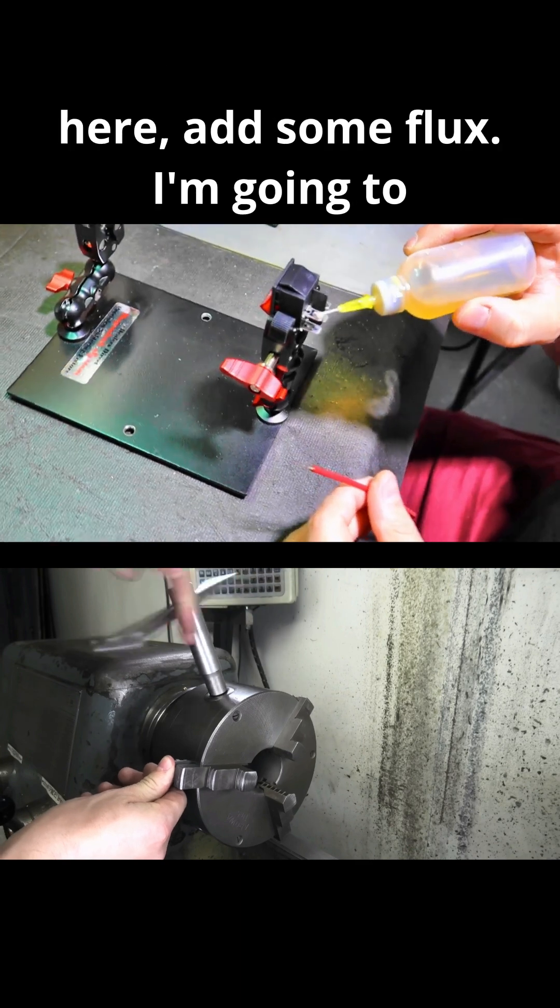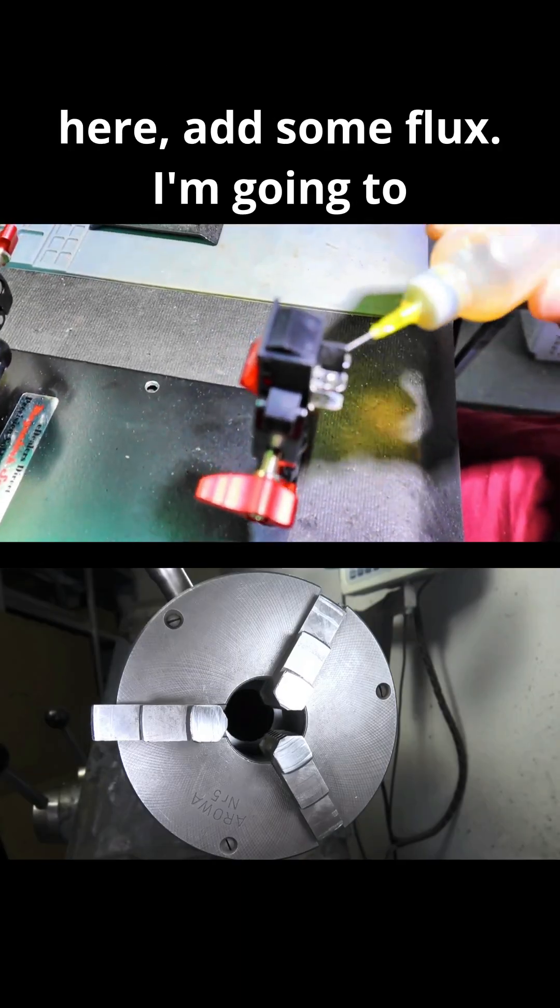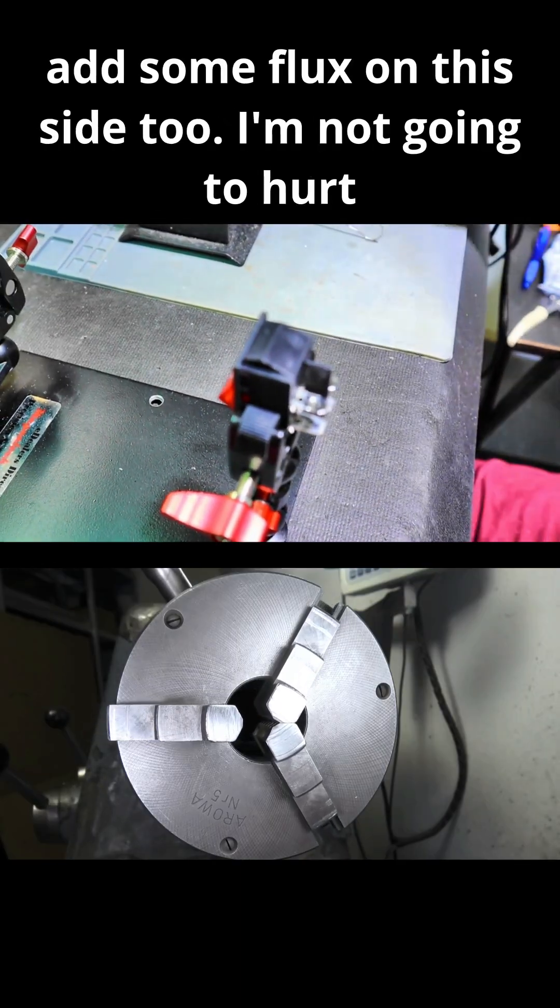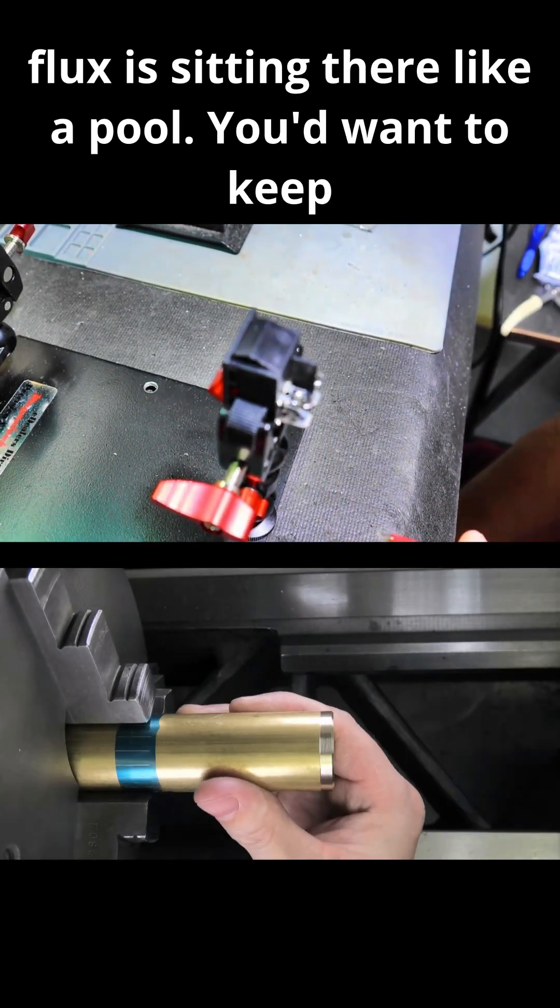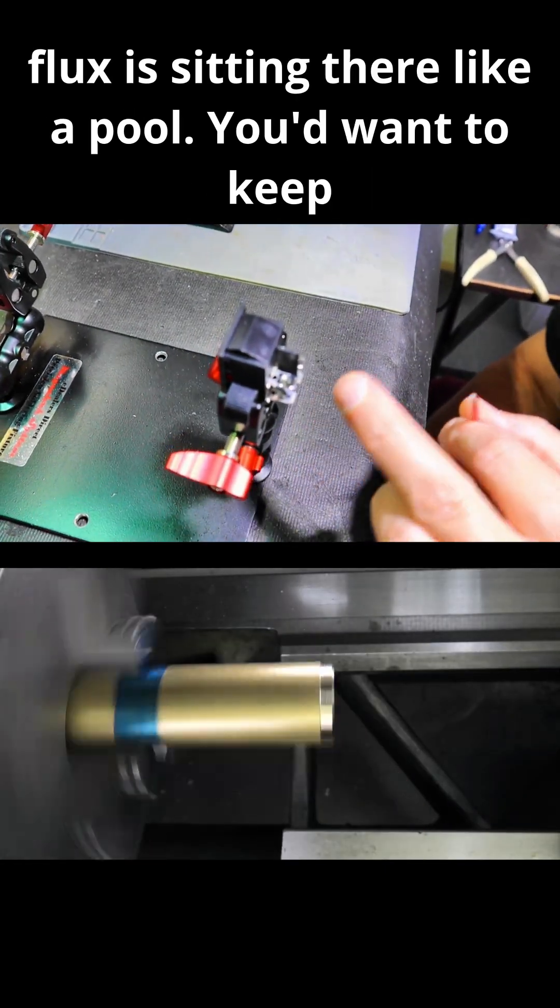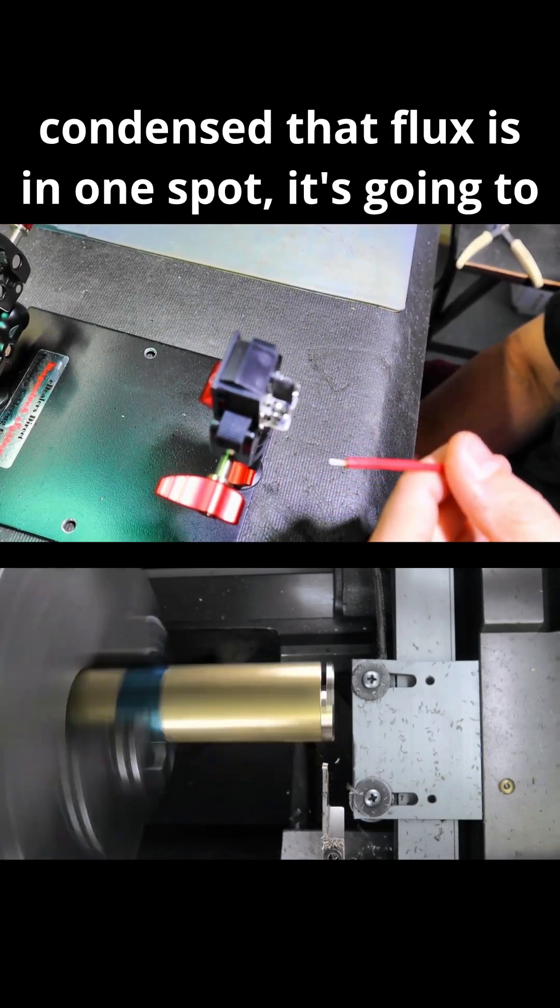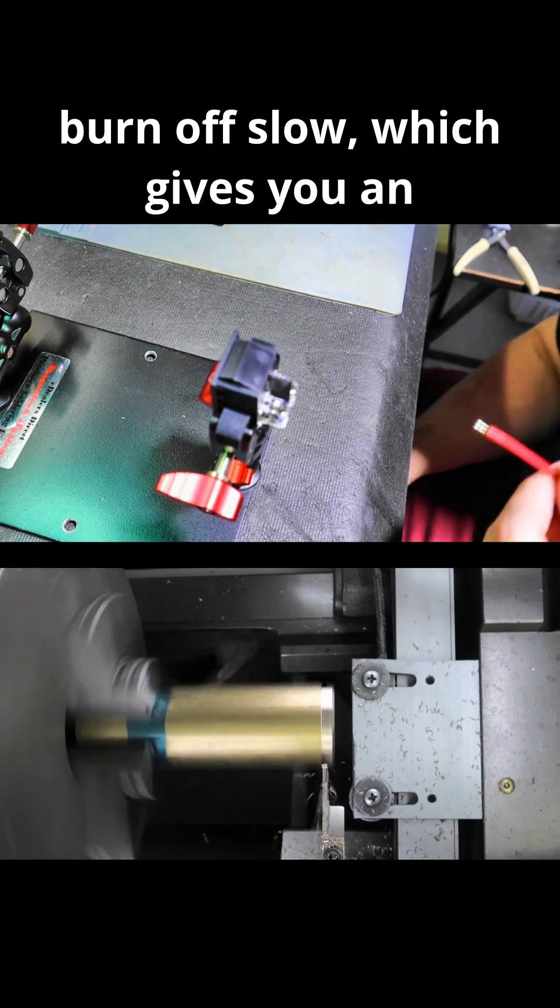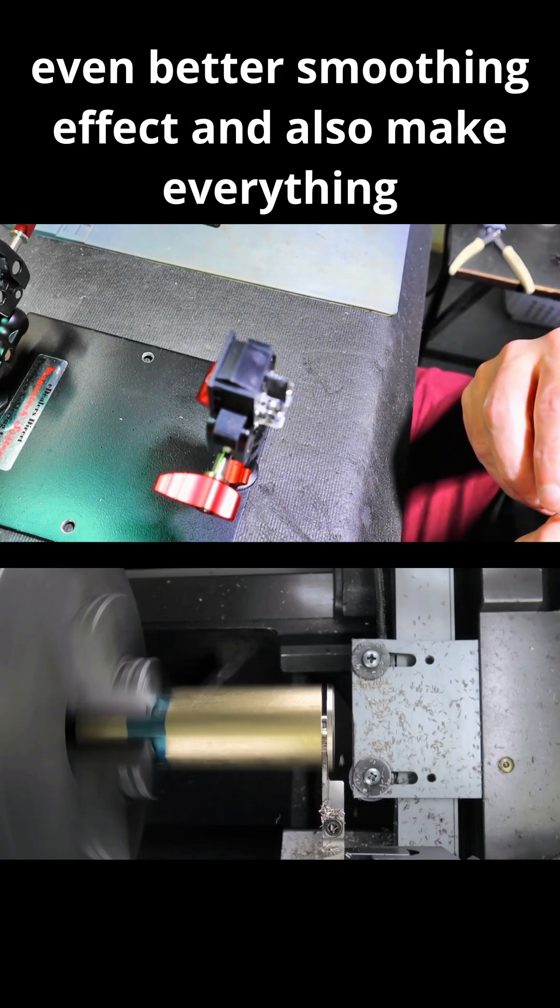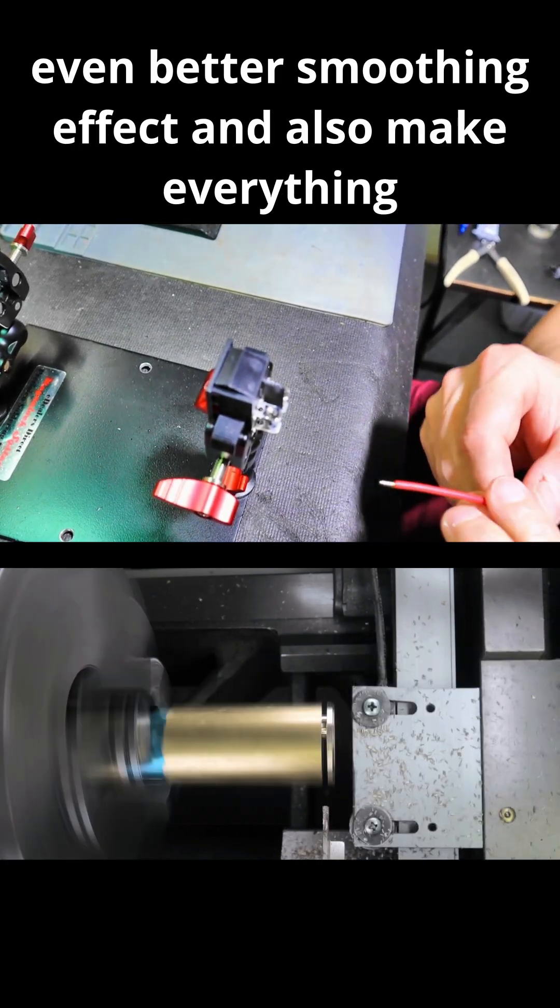So I'm going to come over here, add some flux. I'm going to add some flux on this side too, ain't going to hurt nothing. And you can see there that flux is sitting there like a pool. You want to keep it more like a pool because the more condensed that flux is in one spot, it's going to burn off slow, which gives you an even better smoothing effect and also make everything nice.